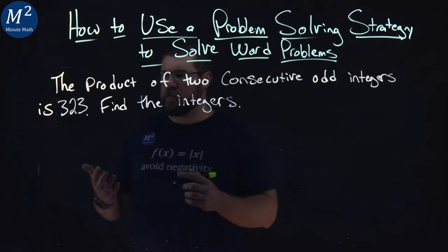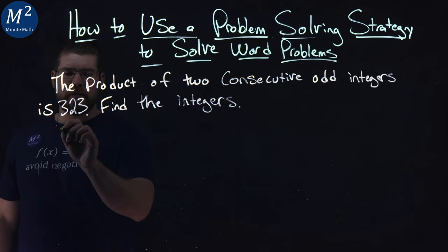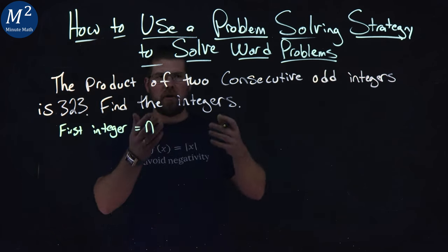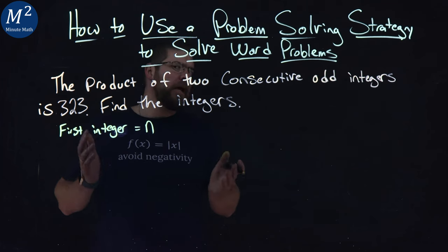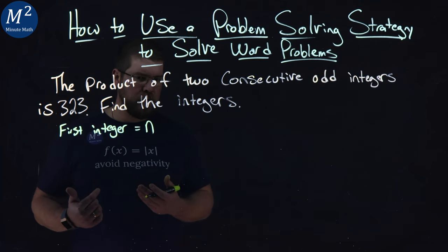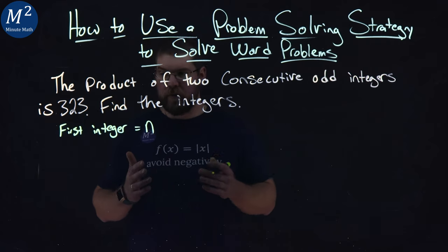Well, if our first integer, if we call that n, our first integer we say is n. We don't know what it is, let's call it n. Okay, and it's going to be odd. But the next integer, the next one also has to be odd, the second one.